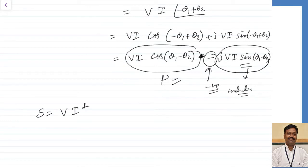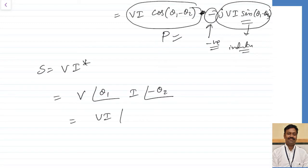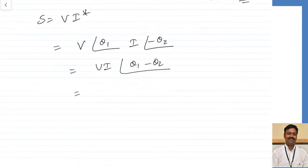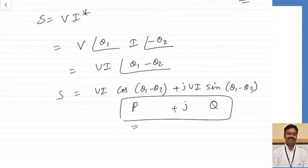If I take V × I conjugate: V is at angle θ₁ and I* is at angle −θ₂, giving V·I∠(θ₁ − θ₂). In rectangular form: V·I·cos(θ₁ − θ₂) + j·V·I·sin(θ₁ − θ₂). This is exactly P + jQ — so S = P + jQ is obtained only by taking V multiplied by I conjugate. That is the reason: whenever you calculate apparent power using phasor analysis in AC circuits, you must multiply V × I*. There are two reasons — to get the difference of angles, and to get reactive power positive for inductive and negative for capacitive loads.